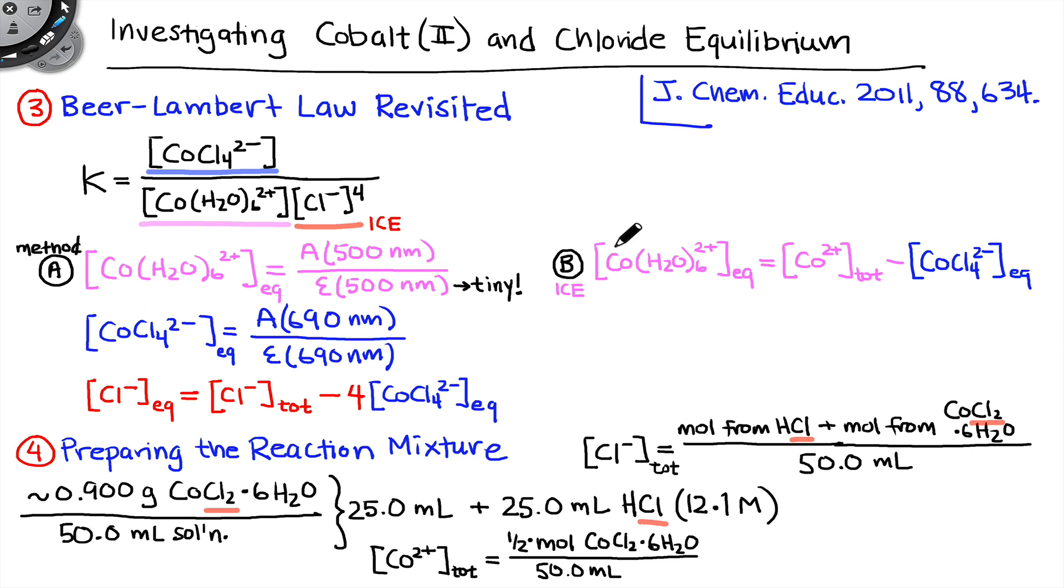And so these three values will be plugged into the equilibrium equation. Out will pop K. And in essence, we're just going to do this at five or six different temperatures to obtain the temperature dependence of K for this reaction and then infer the standard enthalpy and entropy changes from those measurements. And they'll be different for methods A and B. And it's an interesting difference that you'll notice, with method B being potentially more accurate as a result of problematic errors associated with this tiny molar absorptivity for the reactant cobalt complex.